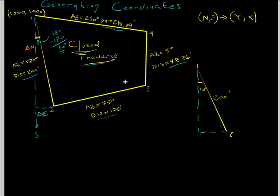So now we can solve using trigonometry, our change in northing and our change in easting. So using trigonometry, what do we know about trigonometry? The cosine function is equal to adjacent over hypotenuse. The sine function is opposite over hypotenuse. And the tangent is opposite over adjacent.